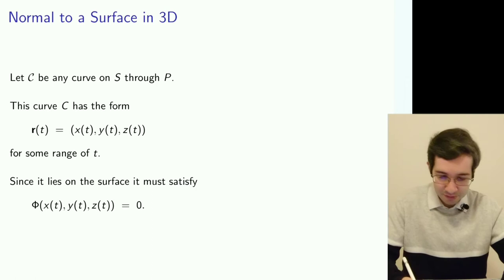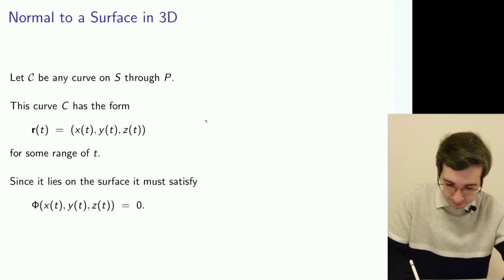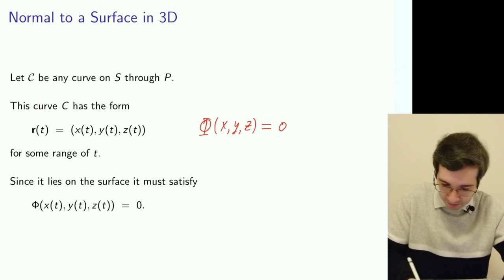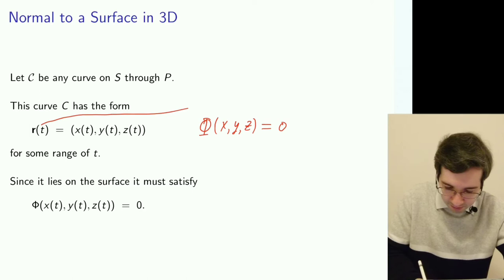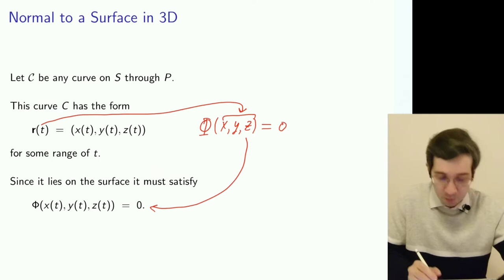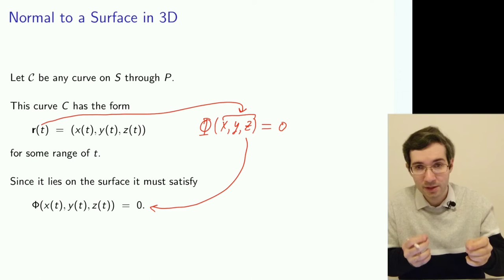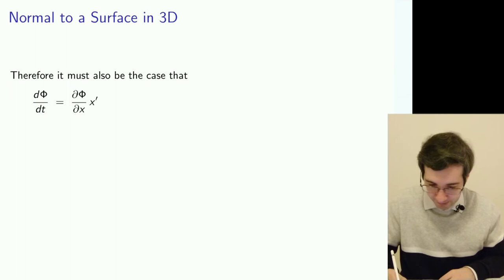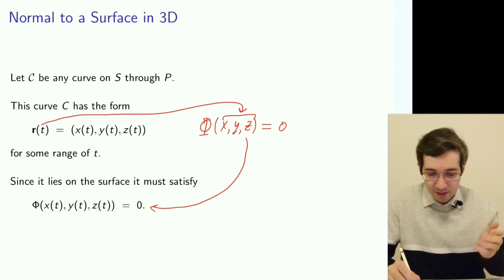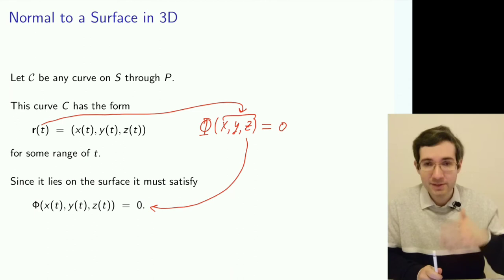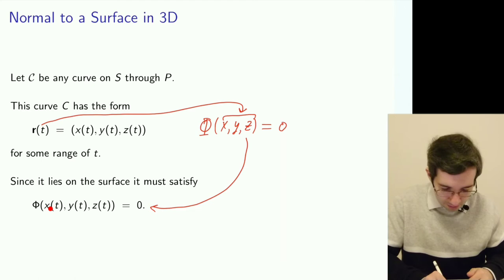Then we substitute that expression into the equation for the surface, which is Φ(x, y, z) equals zero. So if we substitute that expression inside here, we get an implicit equation with only one parameter depending on t. So it will be just an equation for t, for parameter t. And we can differentiate it, because ultimately it's a composite function, function of each of these variables which depends on this parameter. So we can differentiate using the chain rule.